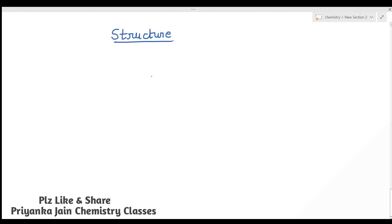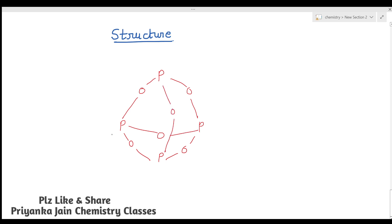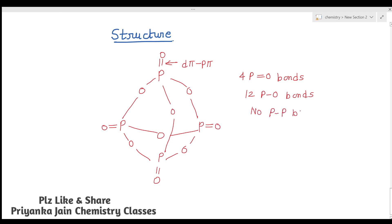In the structure of P4O10, four phosphorus atoms are at the corners of a tetrahedron, joined by oxygen atoms at the six edges — similar to P4O6 and P4O8 — giving 12 P-O bonds with no direct P-P bond. Additionally, four more oxygen atoms are coordinated to each of the four phosphorus atoms via d-π to p-π type bonding, giving 4 P=O double bonds. So P4O10 has 12 P-O single bonds and 4 P=O double bonds.